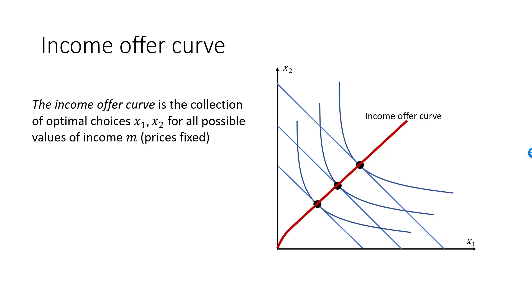The Income Offer Curve is the collection of all optimal bundles X1, X2, where we let M vary between 0 and some number, keeping prices fixed. If both goods are normal, then the Income Offer Curve will slope upwards.